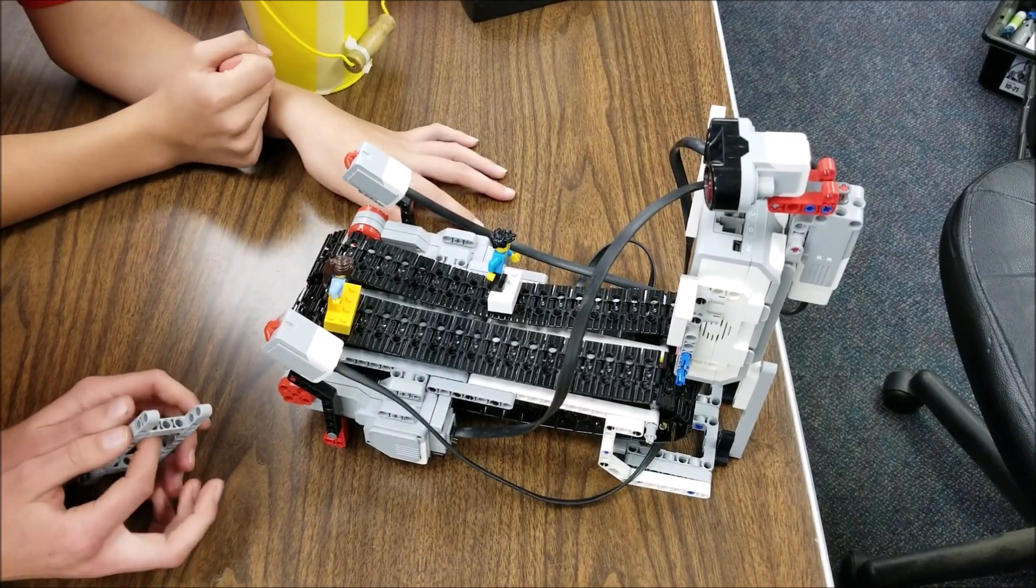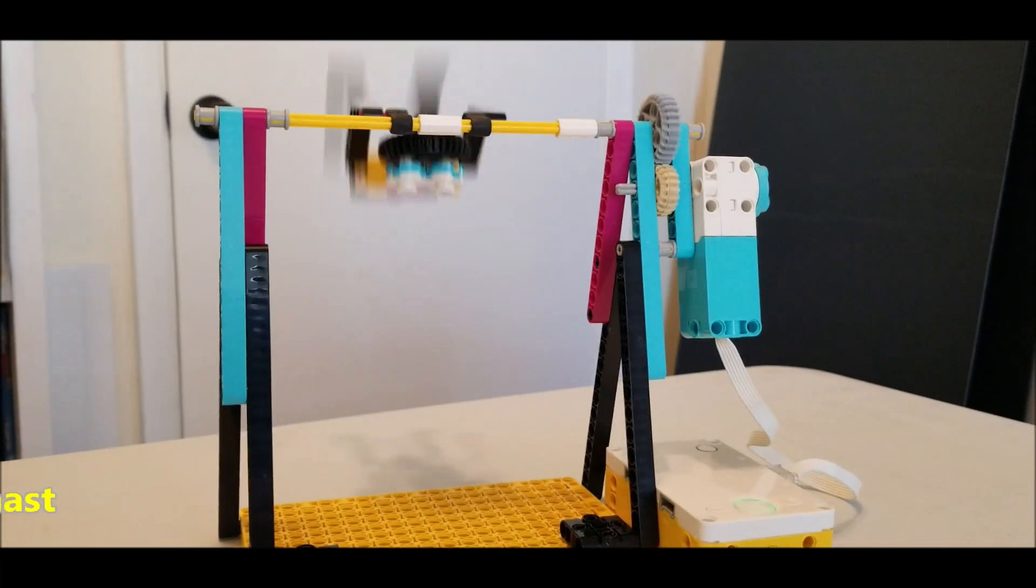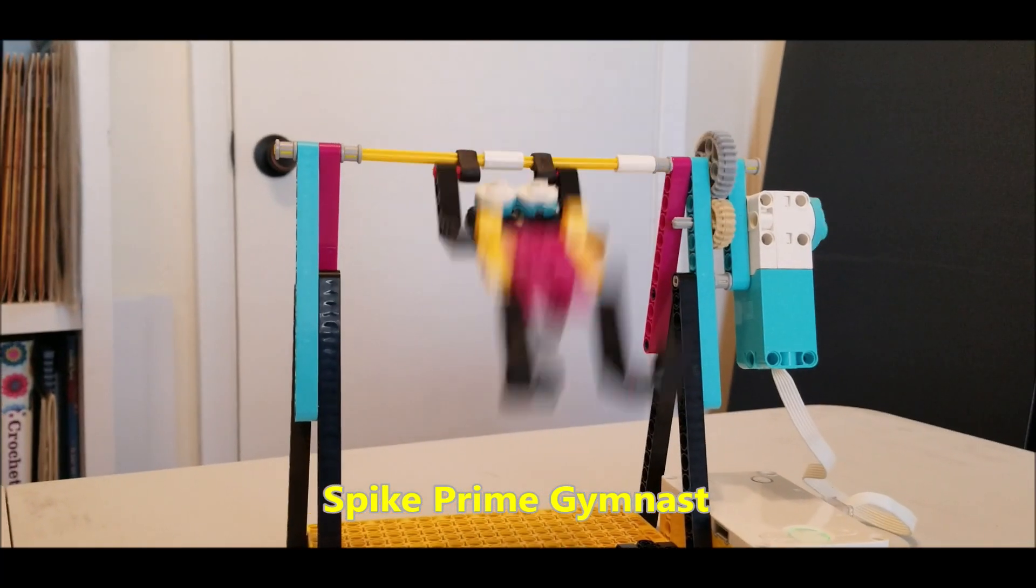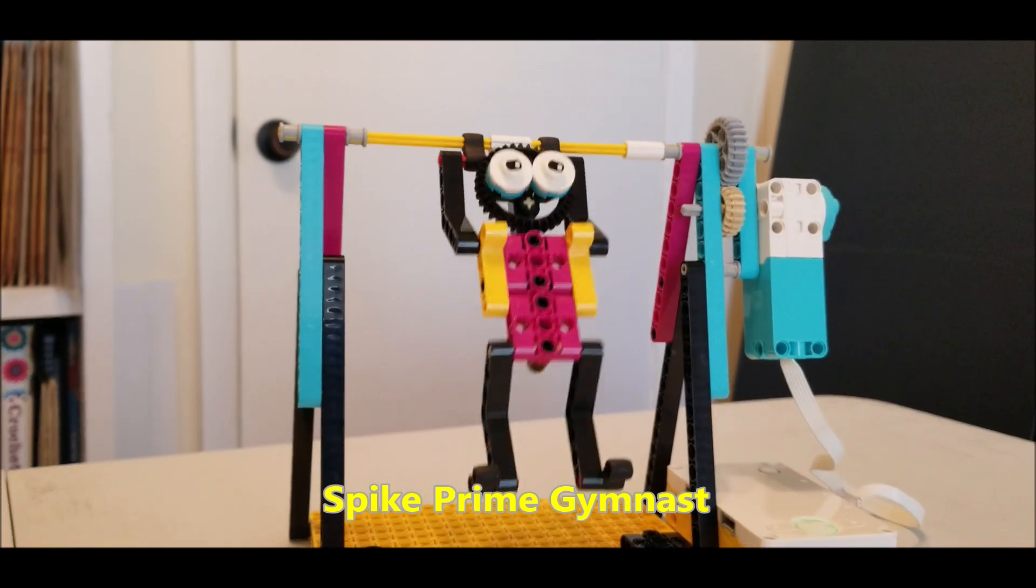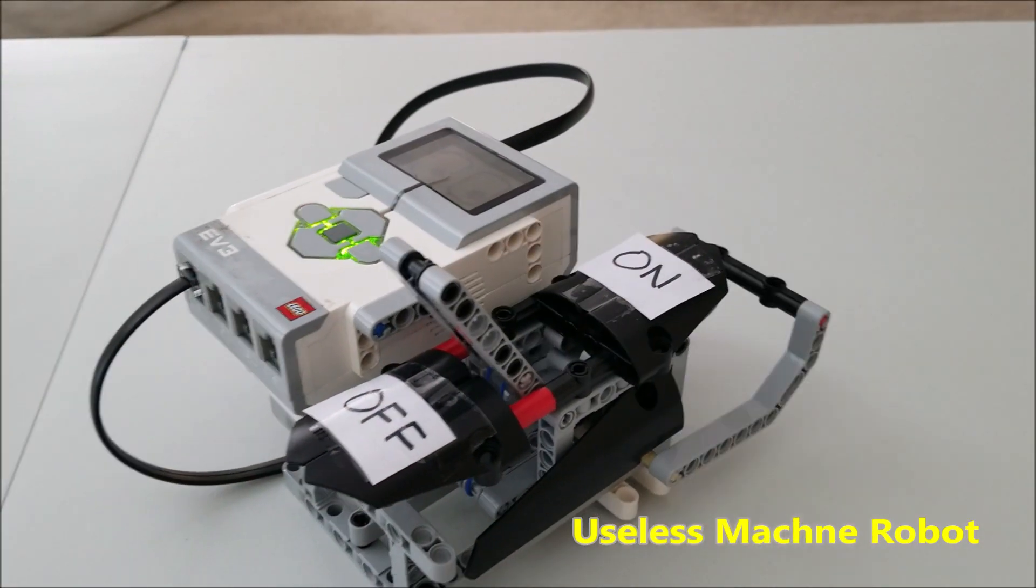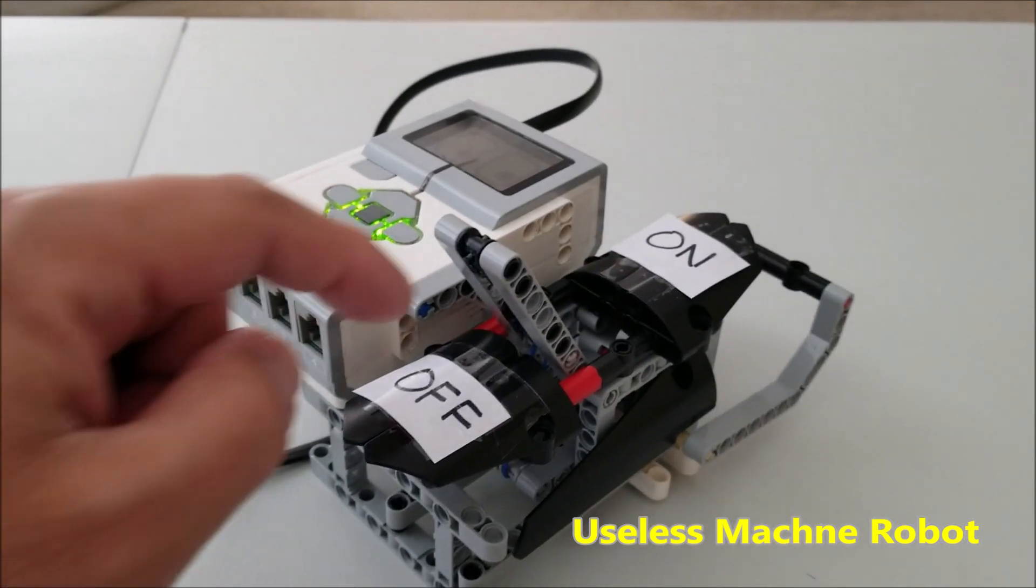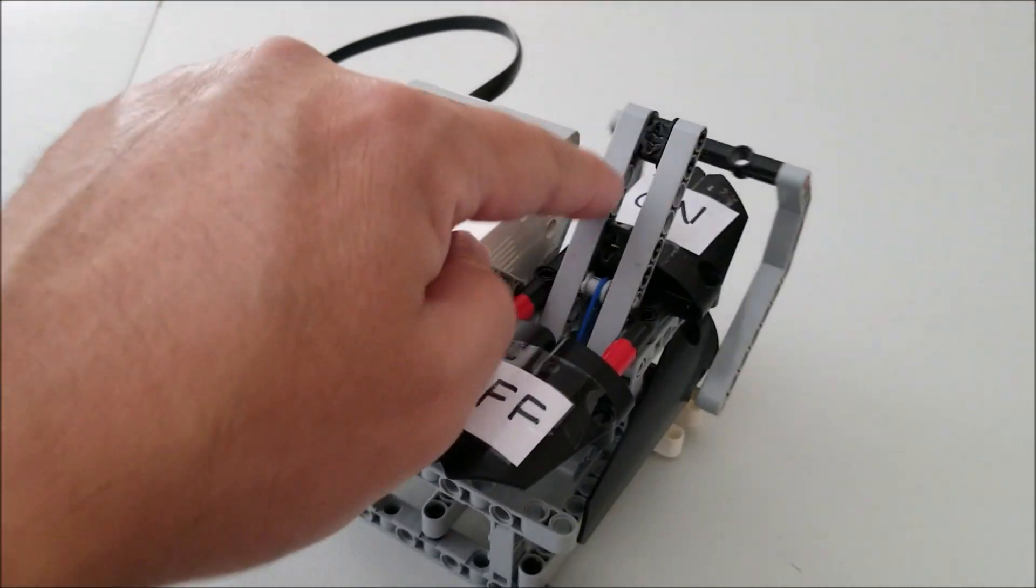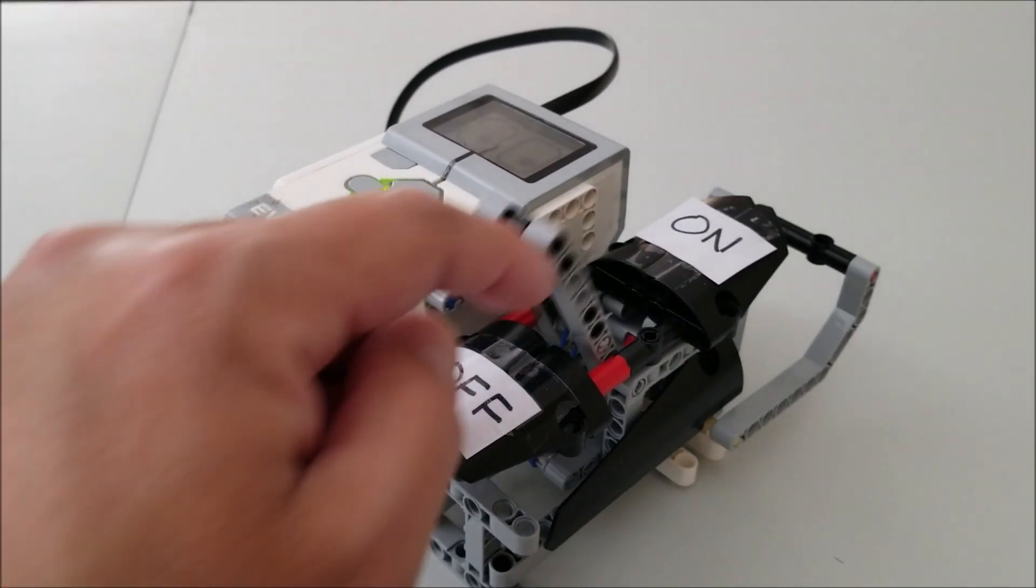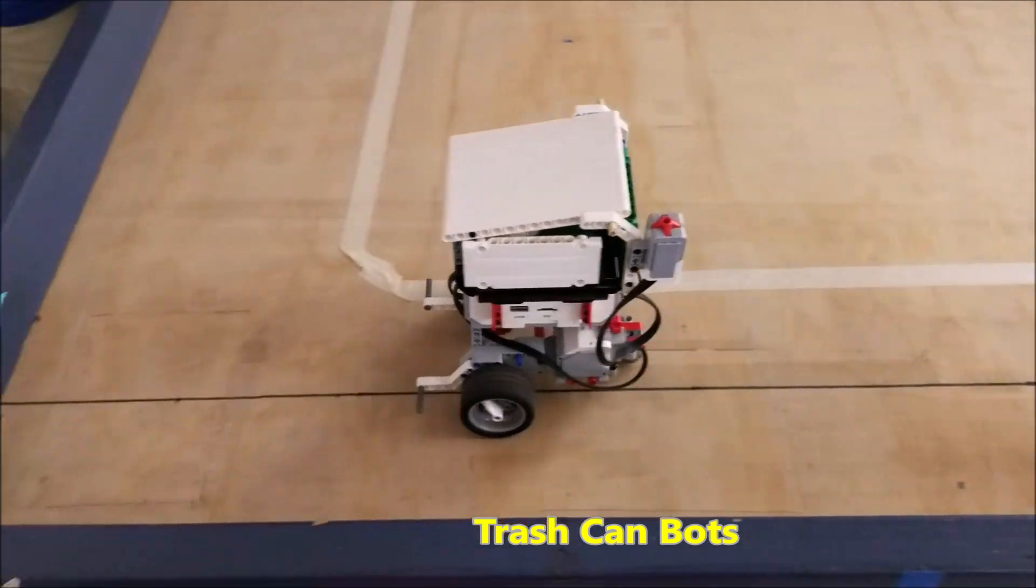Once you've done your sensors, I would definitely allow them to explore the different builds that they can use with either the Spike Prime or the EV3. Allow them to mix and match where they have instructions, but if you have the time, let them mix in some exploratory time where they get to build on their own, especially with those creative kids who don't necessarily want to just follow page-by-page instructions.